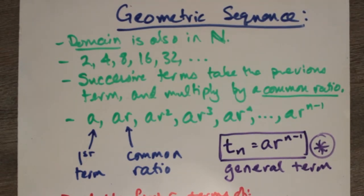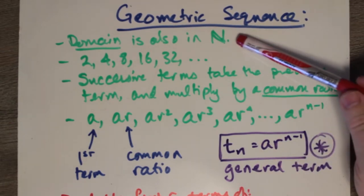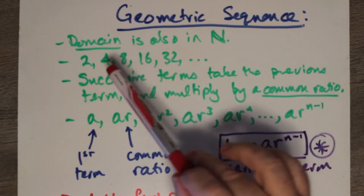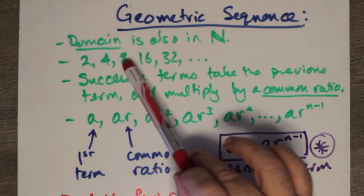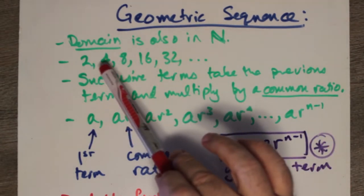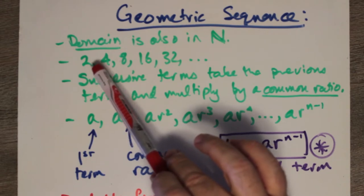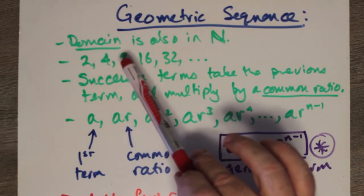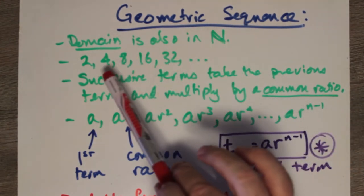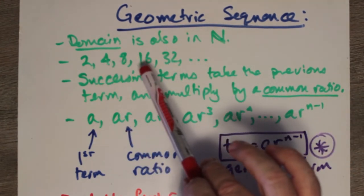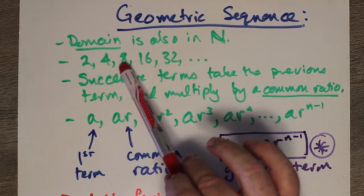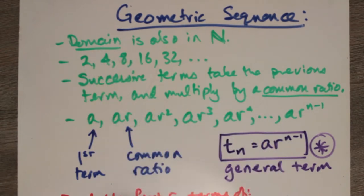We're going to talk now about geometric sequences. As in arithmetic sequences, the domain is also in the set of natural numbers. An example could be 2, 4, 8, 16, 32. As you can see, the numbers rise according to a common multiple. In this particular sequence, each number is 2 times the previous number.